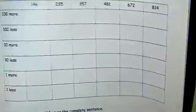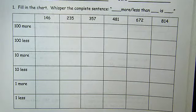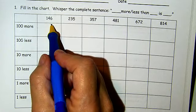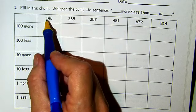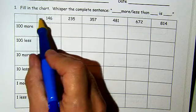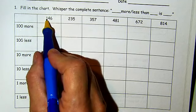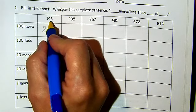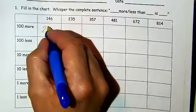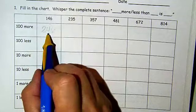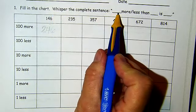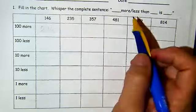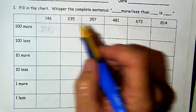So let's take a look at this chart. We're starting with 146. They want us to write a number that is 100 more, so we are adding one to the hundreds. The other two digits are staying the same. We had 146 and we added another hundred — we have 246. And we are going to say 246 is 100 more than 146, or 100 more than 146 is 246.